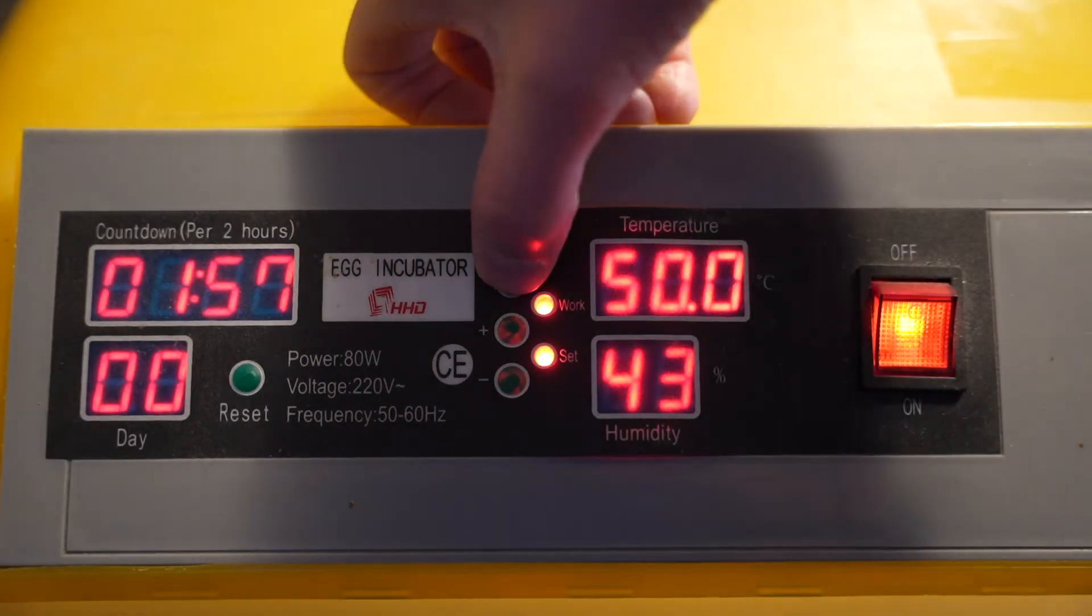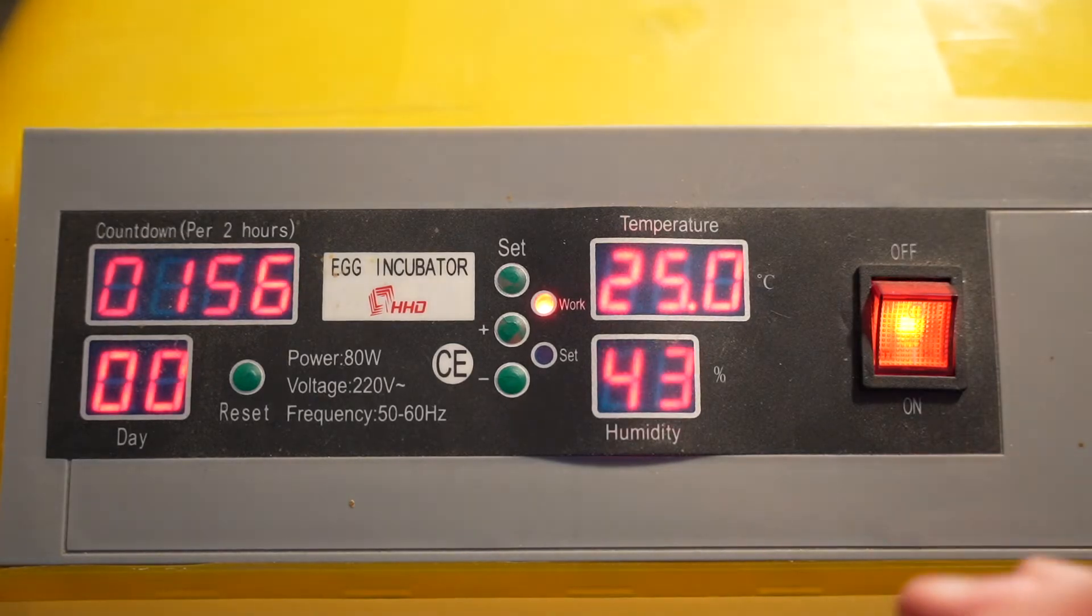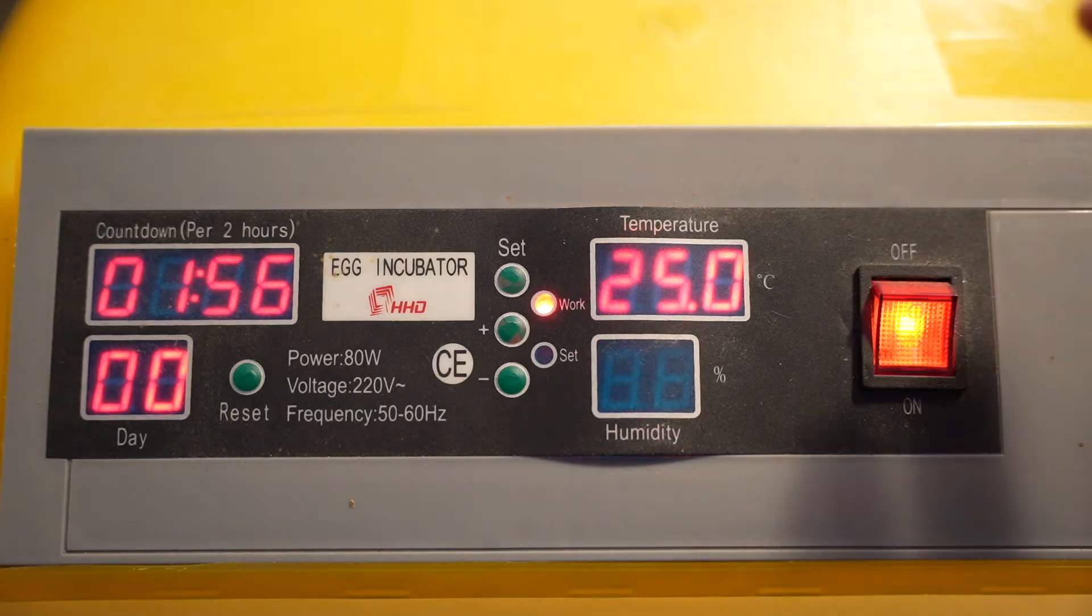Here we go. Press the set button again and now we set the alarm to 50 percent. That means if the humidity drops below 50 it's going to set the alarm.